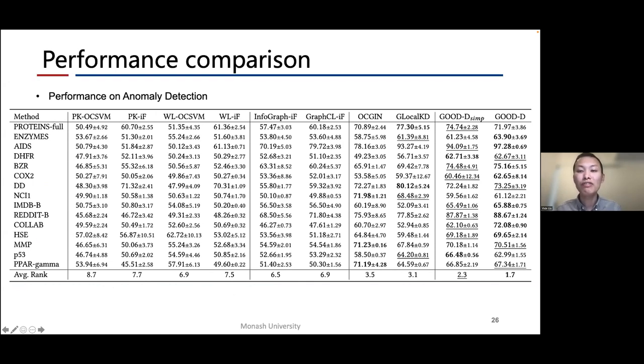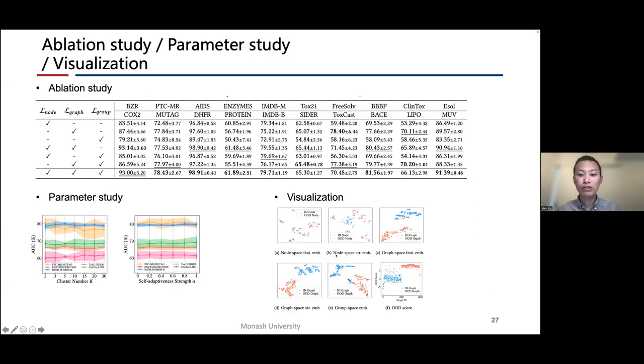We also conduct experiments on anomaly detection tasks because we find our model can also perform well on anomaly detection. We find that even though GOOD-D is designed for OOD detection, it can also have superior performance here. We conduct a series of example experiments to discuss the property of GOOD-D. This is the ablation study to discuss the effectiveness of the three different levels of contrastive loss. This is a parameter study to discuss the selection of cluster number k and the alpha for self-adaptiveness. We can find that our model can have better performance.